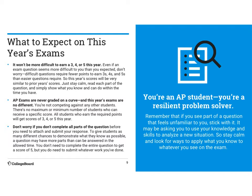What to expect on this year's exam: it is not going to be more difficult to make a 3, 4, or 5 this year. The exam scores will be weighted similar to previous years. They're never graded on a curve — it's not like 15% get a 5, 20% get a 4, and 40% get a 3 and the rest fail. It doesn't work like that. They're going to grade it the same way as before, so you don't have to worry about it being tougher.